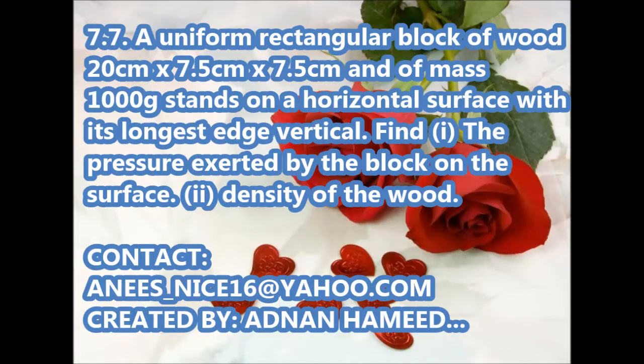Numerical number 7.7: A uniform rectangular block of wood 20 cm × 7.5 cm × 7.5 cm and of mass 1000 grams stands on a horizontal surface with its longest edge vertical. Find: number one, the pressure exerted by the block on the surface; second one is density of the wood.